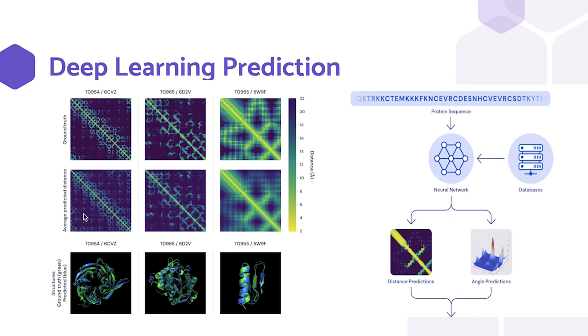This first neural network system is trained on a dataset of protein sequences and protein property databases and is used to generate two matrices. The matrices the model generates predicts the distances between the amino acids and the angles between the chemical bonds that connect those amino acids.